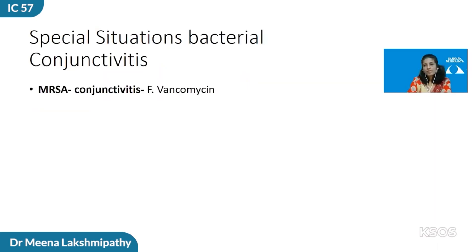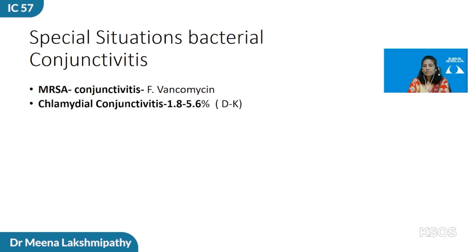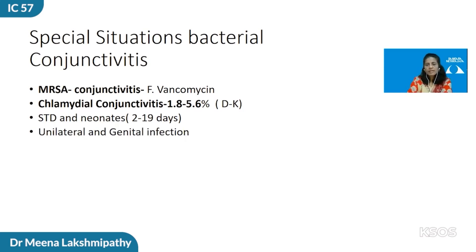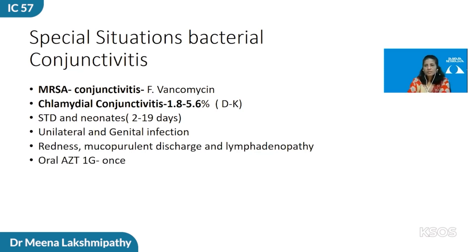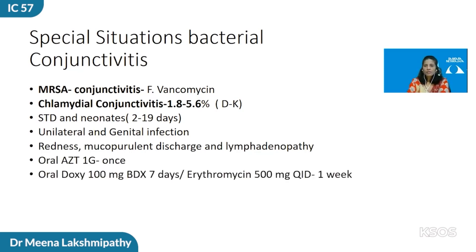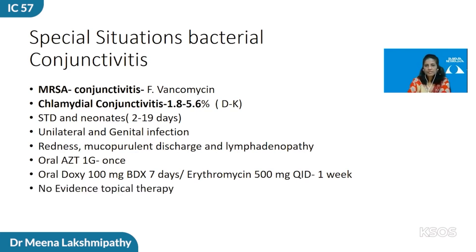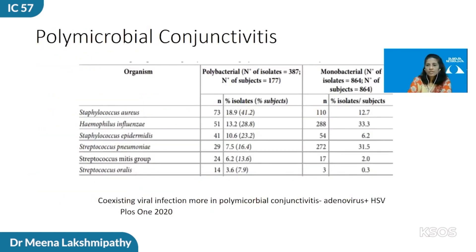Coming to special situations: conditions caused by MRSA — methicillin-resistant Staphylococcus aureus conjunctivitis — are usually treated with fortified vancomycin. Chlamydial conjunctivitis is seen as a sexually transmitted disease in neonates and adults, presenting as unilateral disease with genital infections, severe mucopurulent discharge, and lymphadenopathy. These patients are treated with azithromycin 1 gram per day, or if unavailable, doxycycline 100 mg for a week or erythromycin 500 mg four times a day for one week. There is no evidence that topical therapy helps. It's important to screen partners and send the child for pediatrician evaluation. One in five conditions are polymicrobial, predominantly involving Staphylococcus aureus, Haemophilus influenzae, and Staphylococcus epidermidis. Polymicrobial infections also have a predisposition to underlying viral conditions.